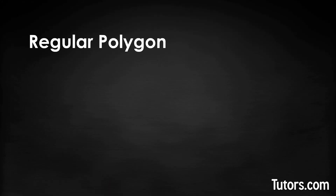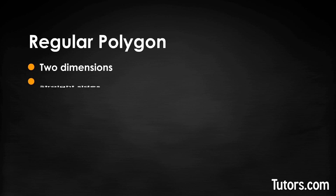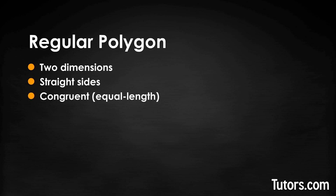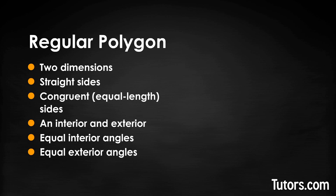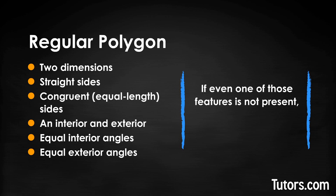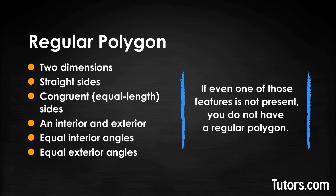What is a regular polygon? To be a regular polygon, the flat closed straight-sided shape must have every interior and exterior angle equal to every other interior and exterior angle, and every side equal in length to every other side. A regular polygon has two dimensions, straight sides, congruent equal-length sides, and equal interior and exterior angles. If even one of those features is not present, you do not have a regular polygon.